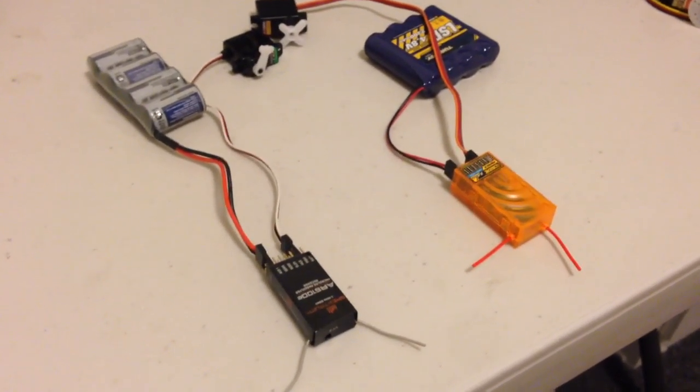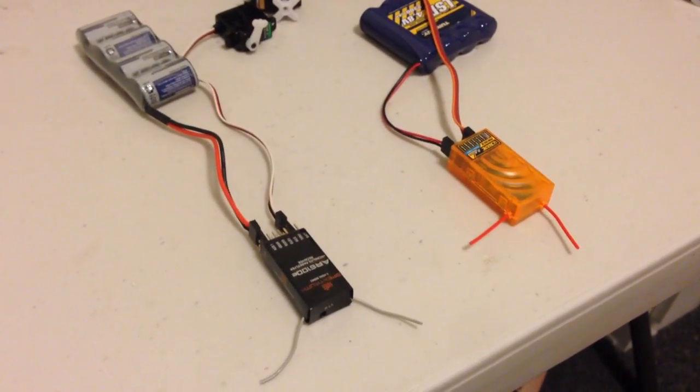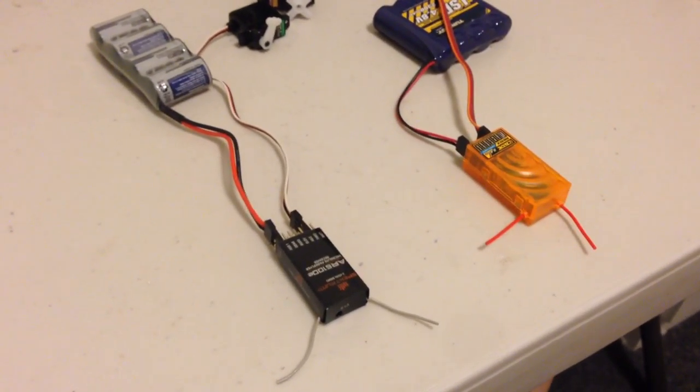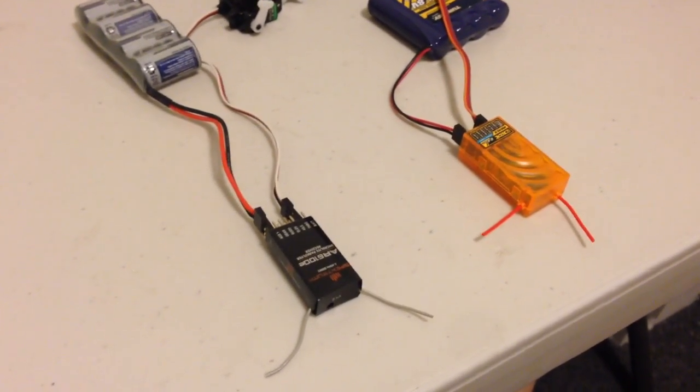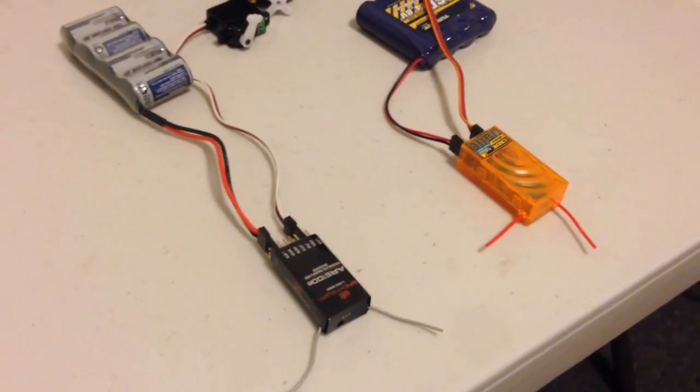Now turning them back on, what I've noticed is that the Spectrum receiver is consistently faster at reconnecting, and the orange one is generally slower. So let's turn that on now.